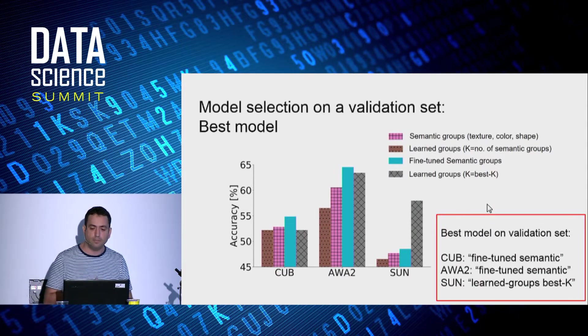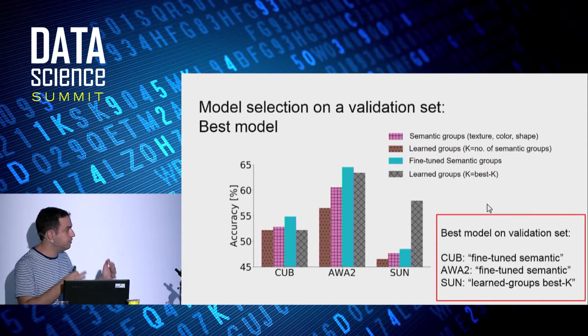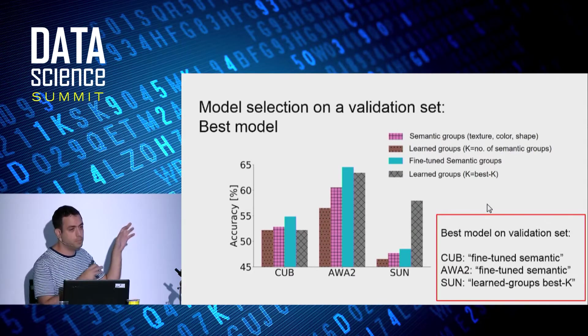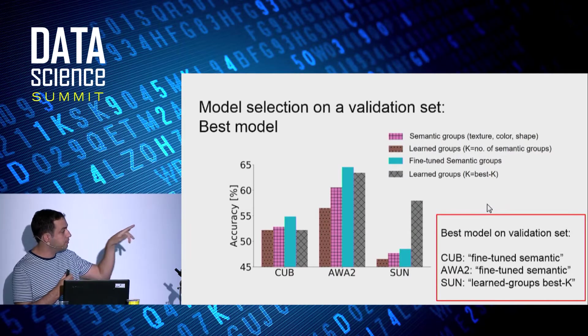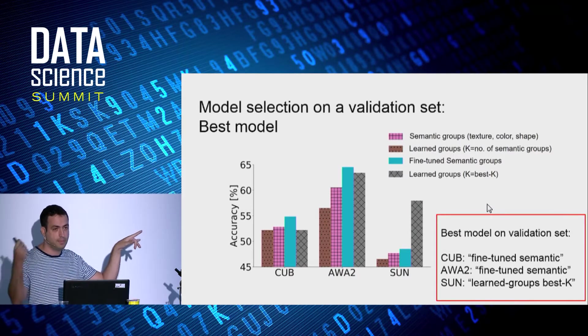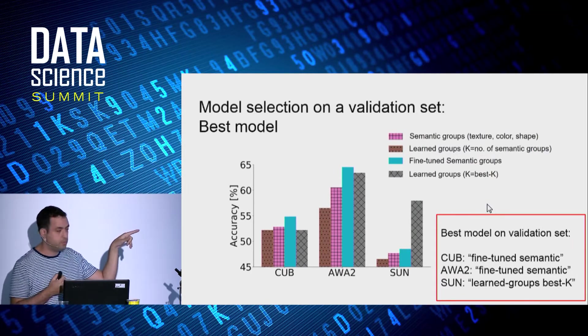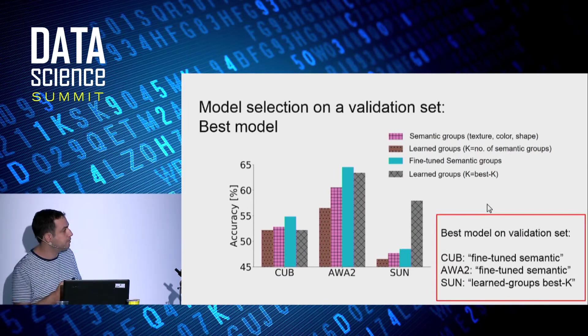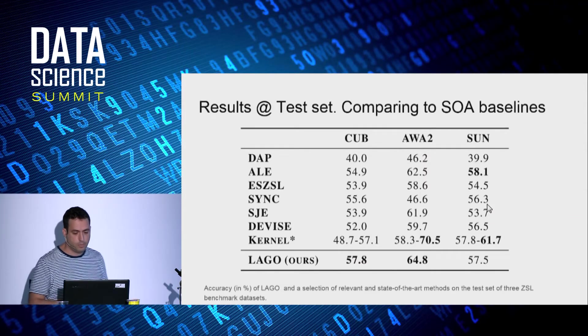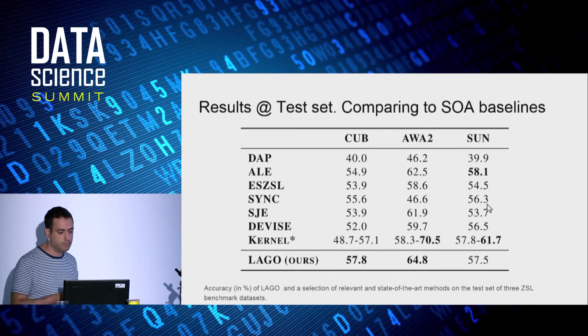Finally, we also use the validation set to choose the best model variant, and we tested LAGO on the test set. So I'll just say it again. All the experiments we've just seen were on the validation set, and we do model selection, and we just choose for each dataset which one is the best, and then we try it on the test set. So for CUB, it's the fine-tuned semantic. Same is for Animals with Attributes. And for SUN, it's the learned groups with the best k. And we see that LAGO outperforms previous baselines on CUB and AWA by a significant margin. And on SUN, LAGO loses by a small margin.